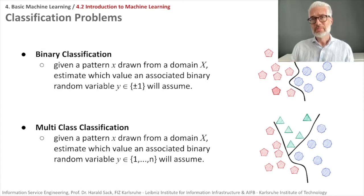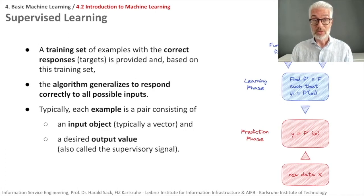There are two different principles of learning. One is learning by example, the so-called supervised learning. How does supervised learning work? We have examples—a training set with correct responses, targets, or labels provided in the beginning. The algorithm then generalizes to respond correctly to all possible inputs, also inputs the algorithm hasn't seen so far.